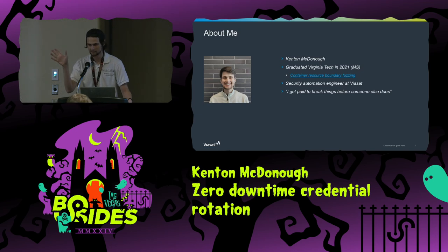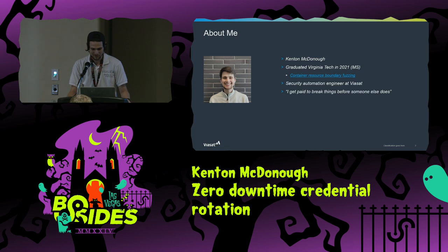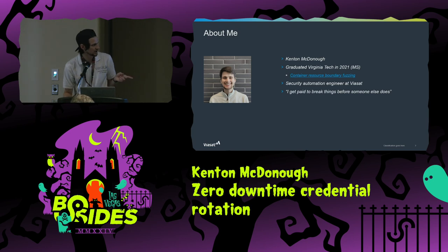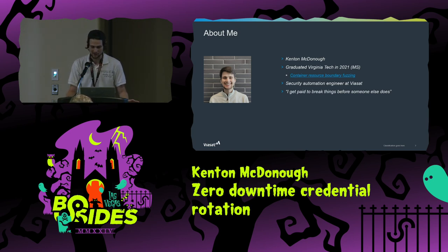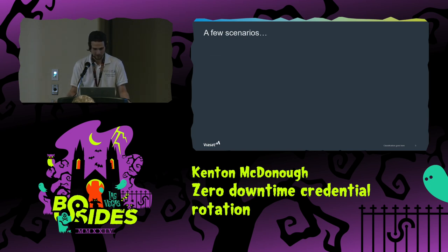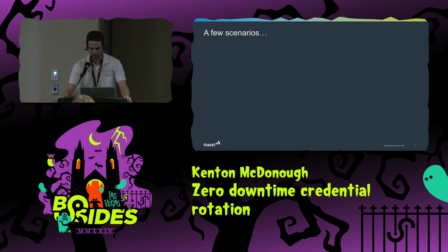I'm Kent. I graduated from Virginia Tech in 2021, so I'm fairly new to the industry — go easy on me. I had a paper about container resource fuzzing that I thought was pretty cool, but I'm a security automation engineer at Viasat, and I like to say I get paid to break things before somebody else does. One of my first big projects was on credential rotation and credential management for one of our newer systems.